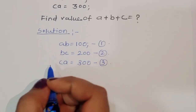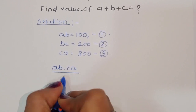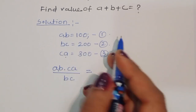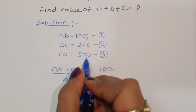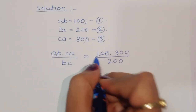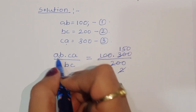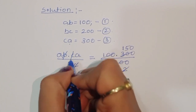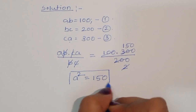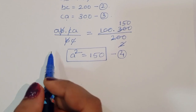Now we can do one thing: compute AB times CA divided by BC. AB times CA divided by BC equals 100 times 300 divided by 200, which gives 150. Here AB and BC share B, and CA and BC share C, so those cancel, and we get a squared equals 150. This is equation number 4.